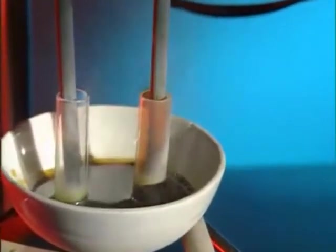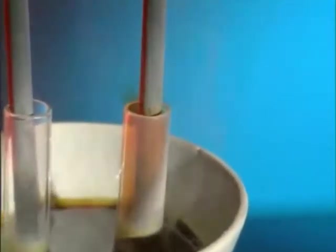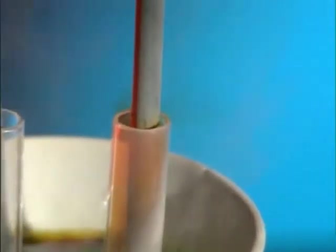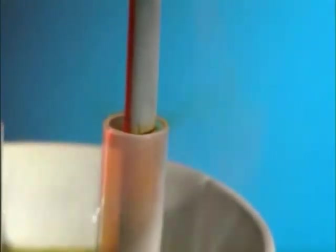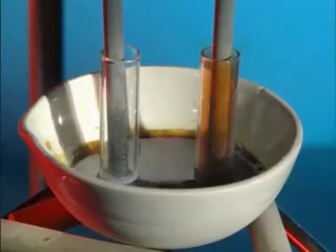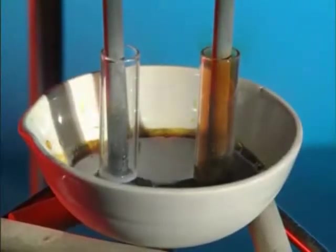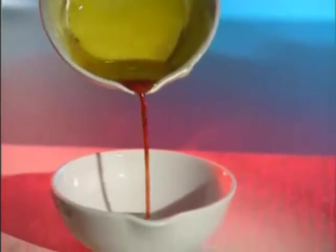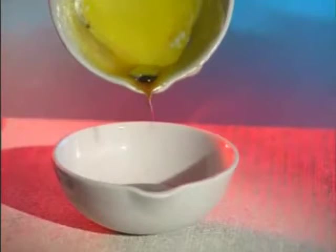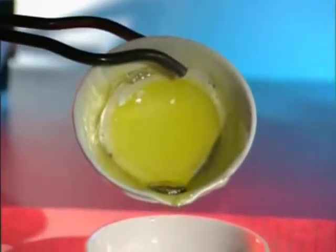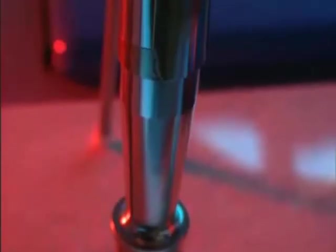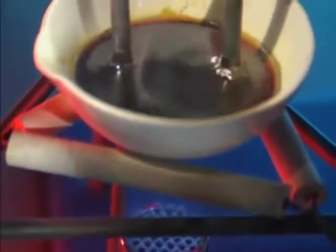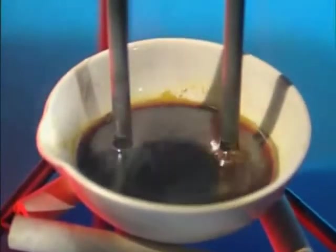What could the brown gas be? The gas is bromine. Although nothing obvious appears to be happening at the left-hand electrode, pouring the molten lead bromide away reveals a small silvery metallic bead. This is pure lead. So, passing an electric current through molten lead bromide breaks it down into the elements lead and bromine.